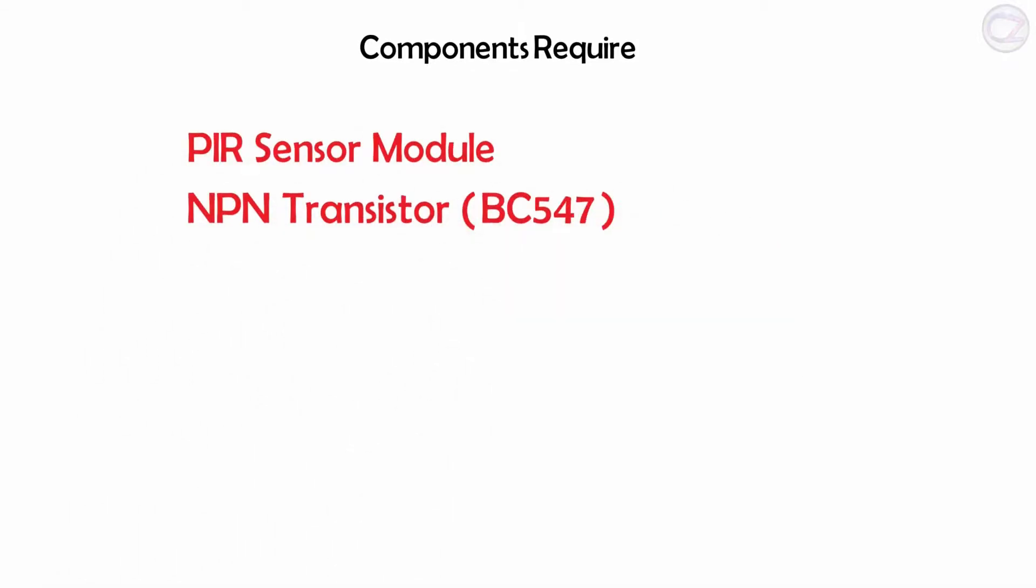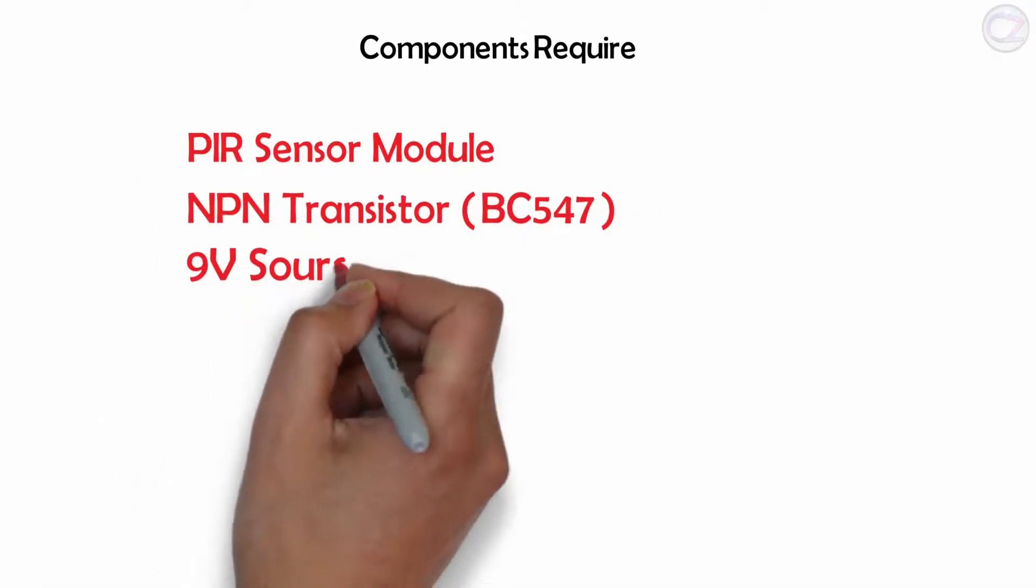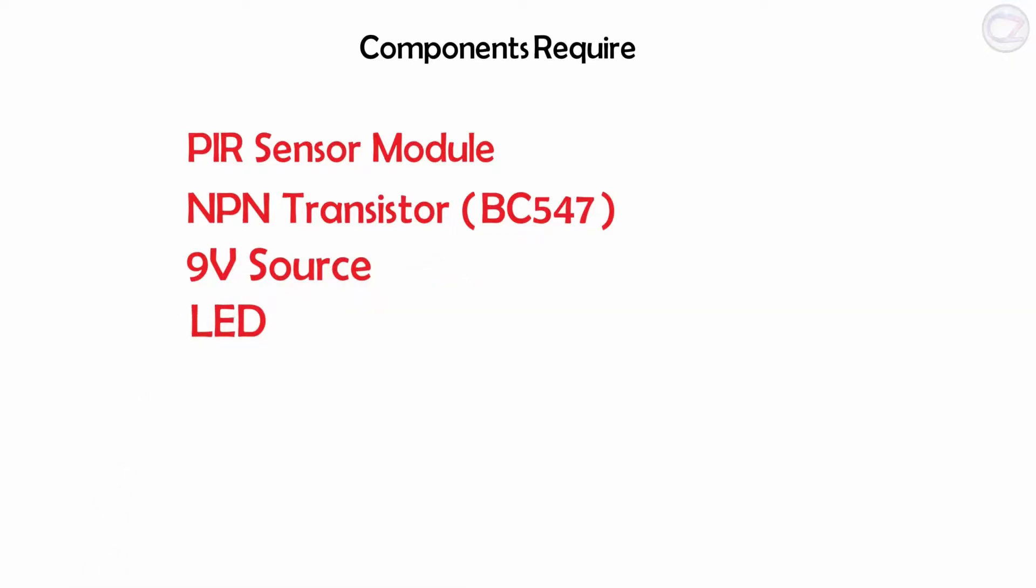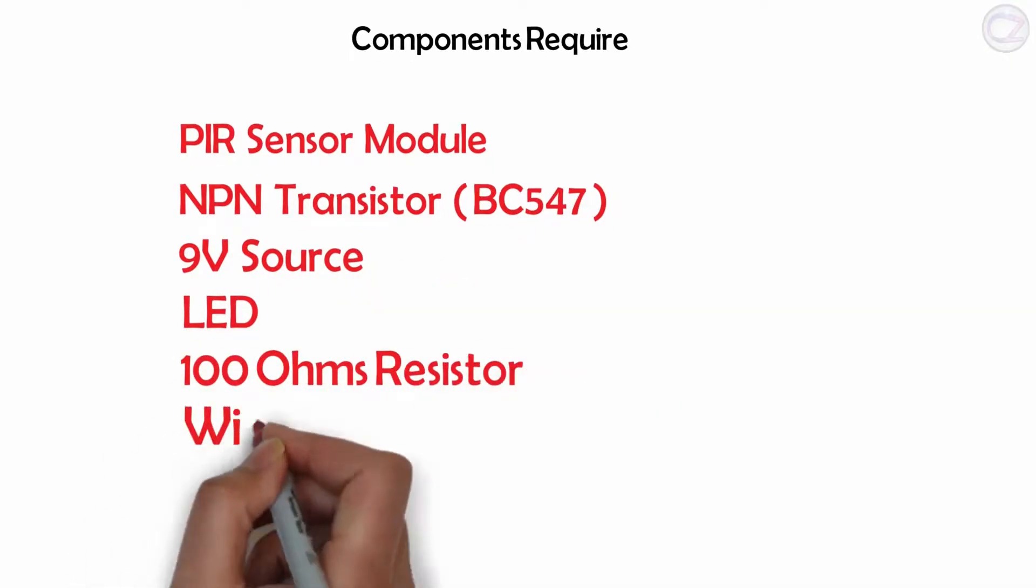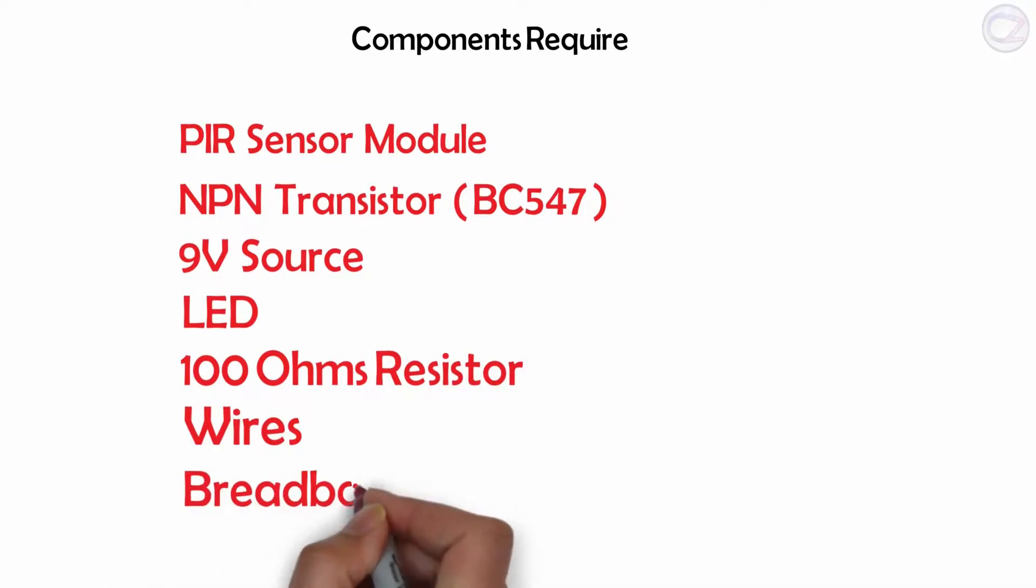To make this project you need a PIR sensor module, an NPN transistor such as BC547, 9-volt source, LED, 100-ohm resistor, some connecting wires, and a breadboard. If you don't know this circuit well, there is something to know before making it.